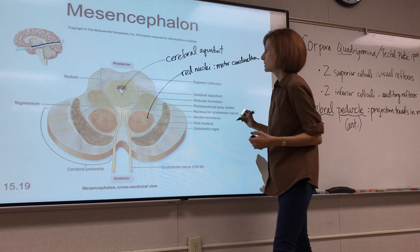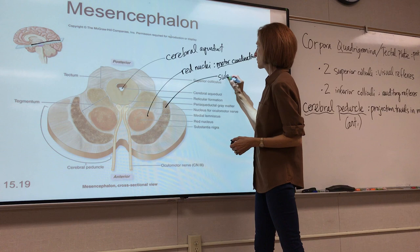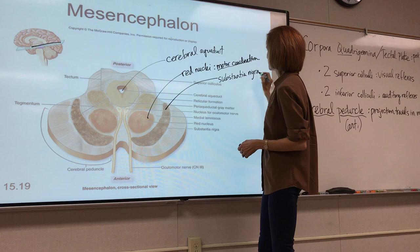Notice the nuclei shown in red — these actually appear red because they have a really good blood supply. These are called the red nuclei. They help coordinate muscle contraction, primarily in the upper extremities, particularly with flexion movements. Just know they're important for motor coordination.